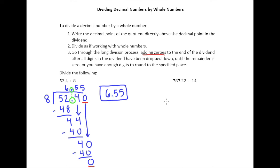Alright, so now let's apply all these steps to this example. So we have 787.22 divided by 14. We need to figure out how many times 14 goes into 78. Well, think about something easier than 14.